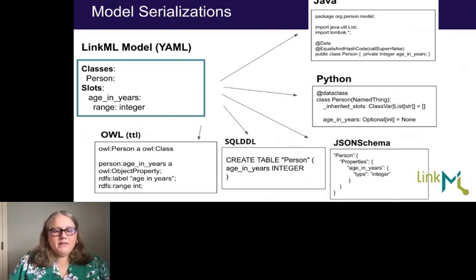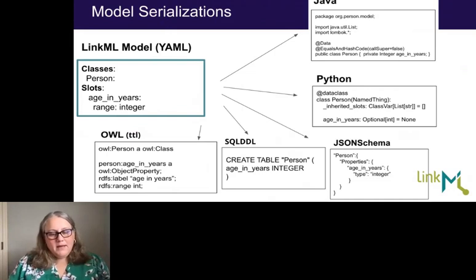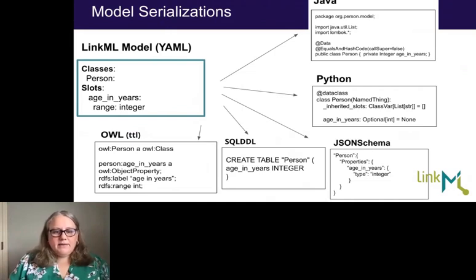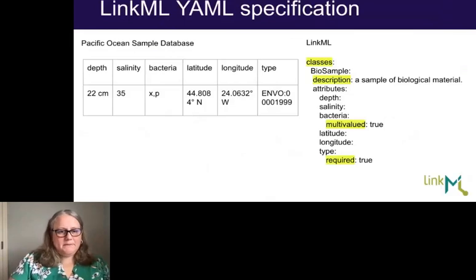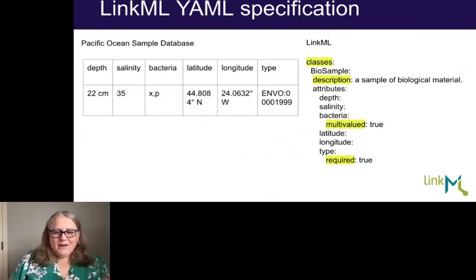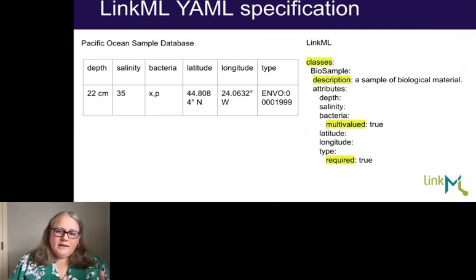Going back to our Pacific Ocean sample database, I've added a few columns here to better describe the sample. Thinking of one row in the spreadsheet as an instance of an entire class of data, we can easily extract that this data set is about a higher-level sample — so we call that a class in LinkML. One feature I really like is the ability to write a description for the class. In SQL, it's really hard to write a description on a table without extra software or a whole other layer of schema UML.